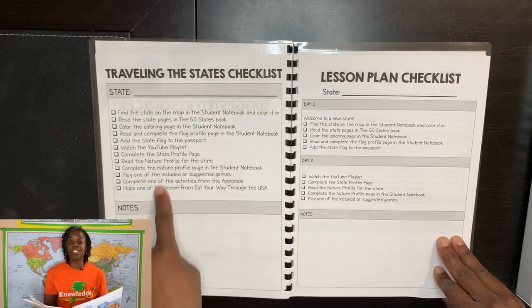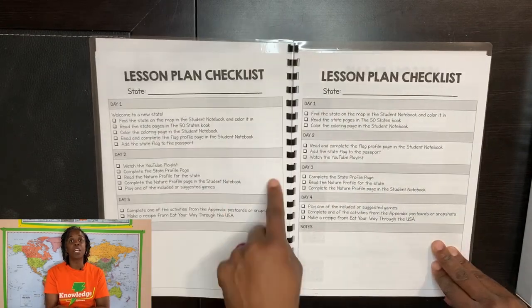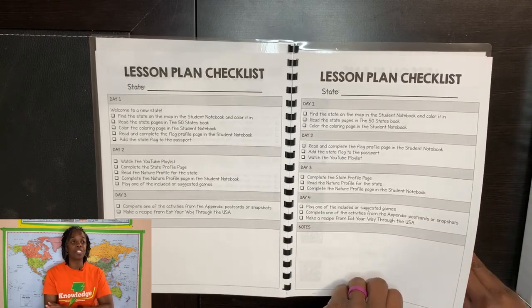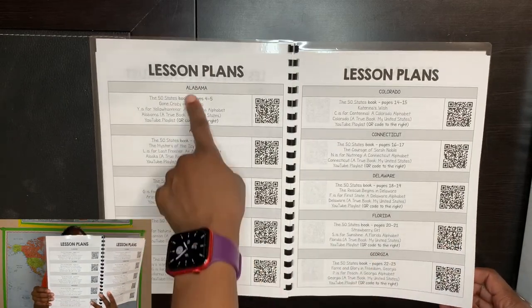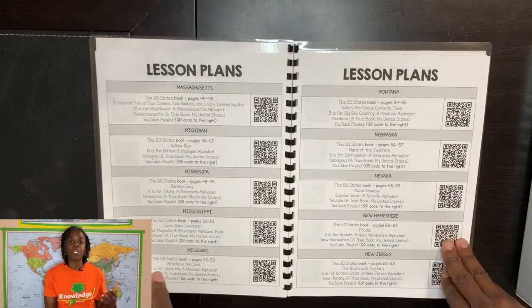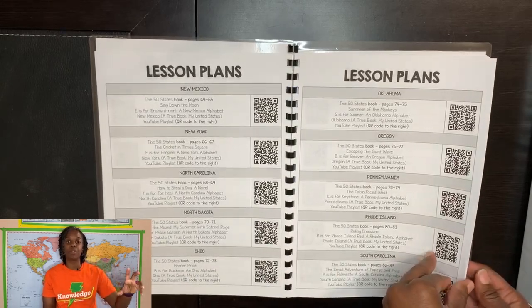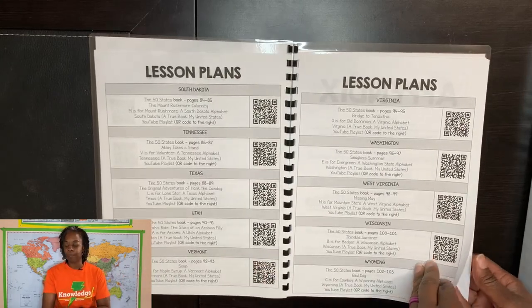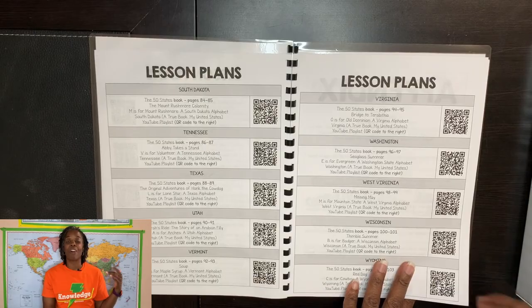You will also get a traveling the states checklist along with a lesson plan checklist. Within this lesson plan, you can do it two, three, or four days a week. For us, we're actually going to be doing it five days a week, which will just stretch it out. We will do one state per week. The lesson plans for each state are in alphabetical order, but you don't have to go in that specific order. I'm going to choose the state we're currently learning about in US history first, then move on. There are also QR codes to scan for a YouTube playlist with videos, documentaries, and games.